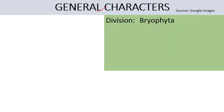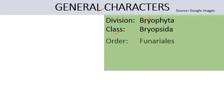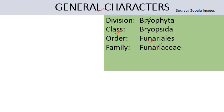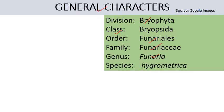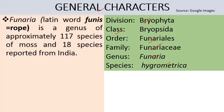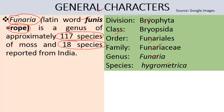Firstly we will discuss its systematic position. Funeria belongs to division Bryophyta, class Bryopsida, order Funariales, family Funariaceae, genus Funeria, and the most common species is hygrometrica. The word Funeria is derived from a Latin word 'funis' which means rope or cord. This genus contains approximately 117 species, of which approximately 18 species are reported from India.